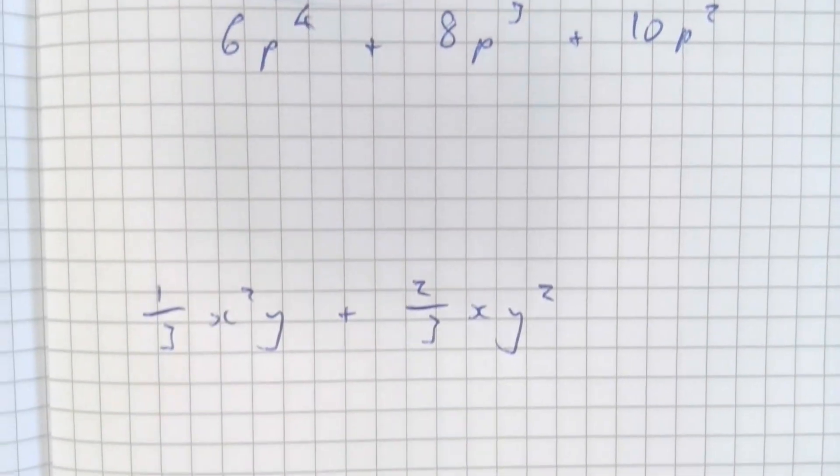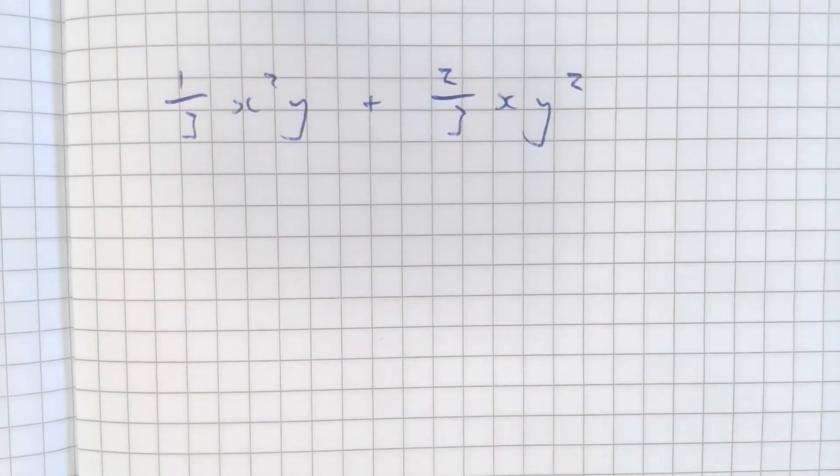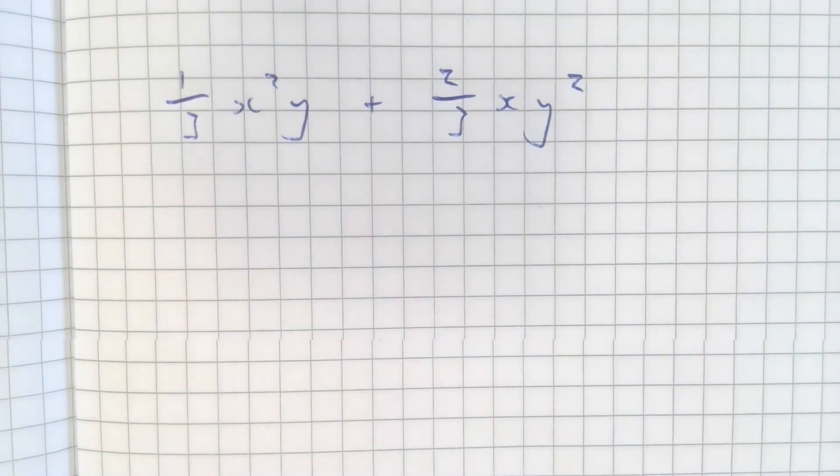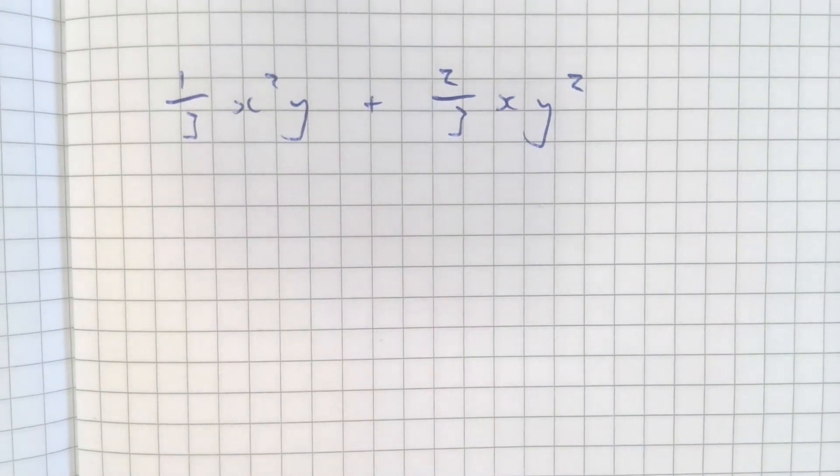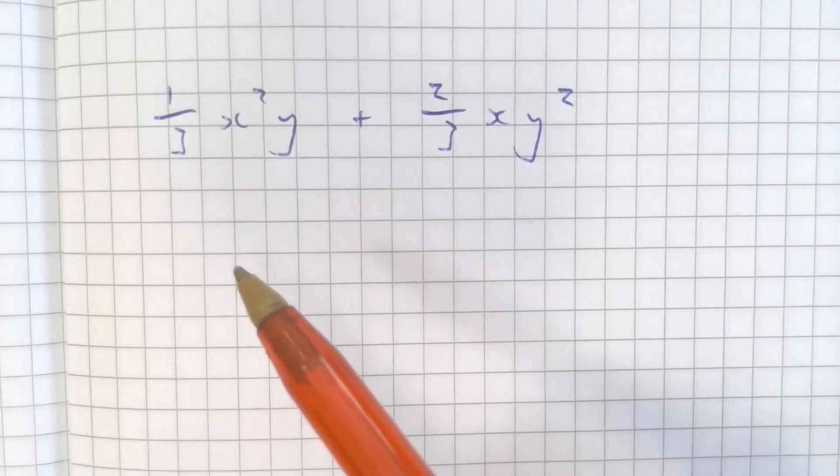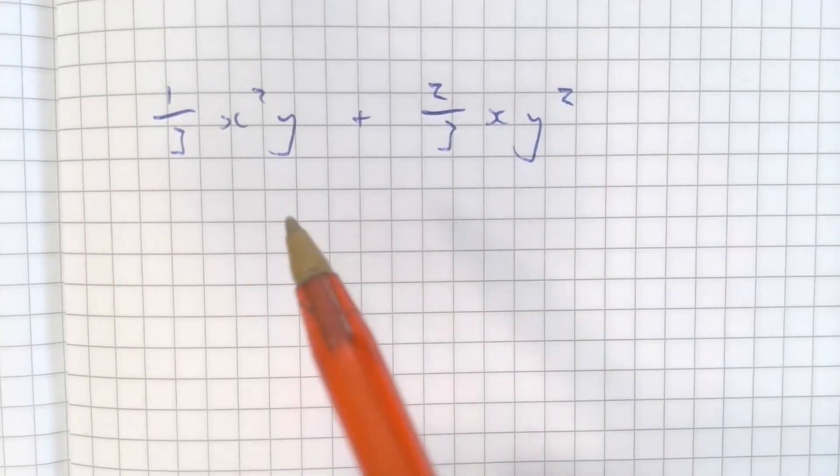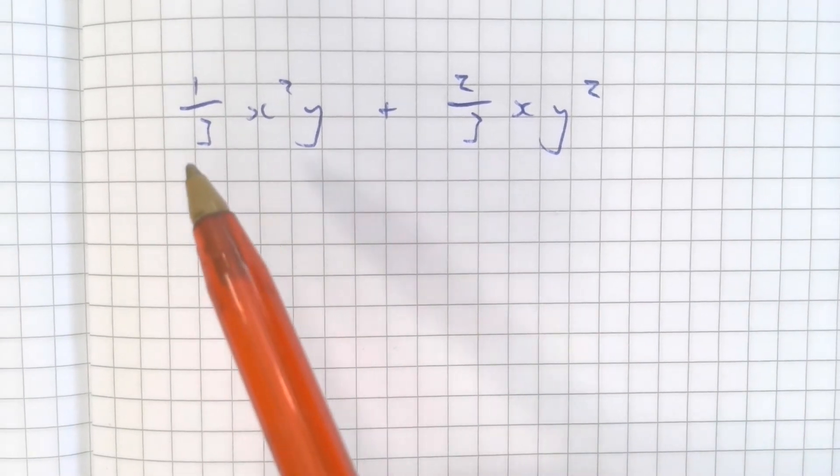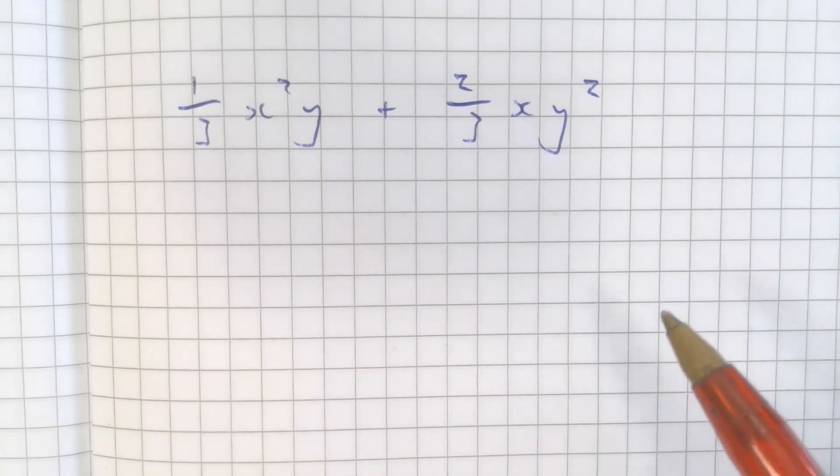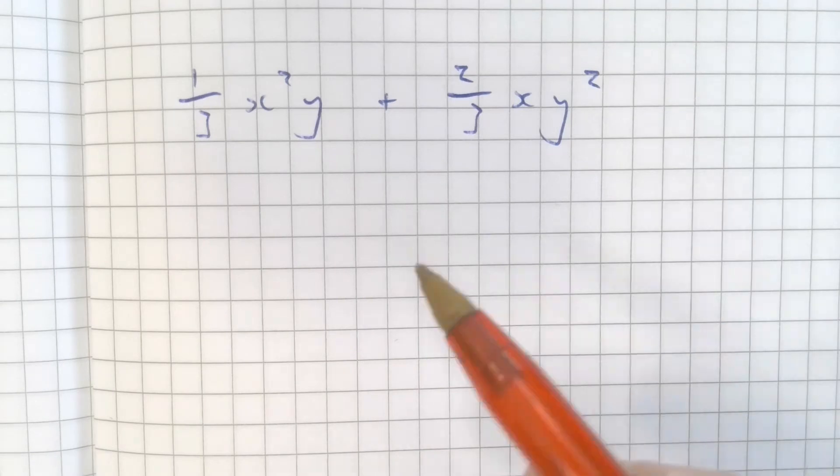But obviously, if we had something that looks like this, then things become a little bit trickier. What if it was the case that we had fractions in here? Well, we'd have to factorize out the fraction element of this to make what's inside the bracket whole numbers. That would be my recommendation.